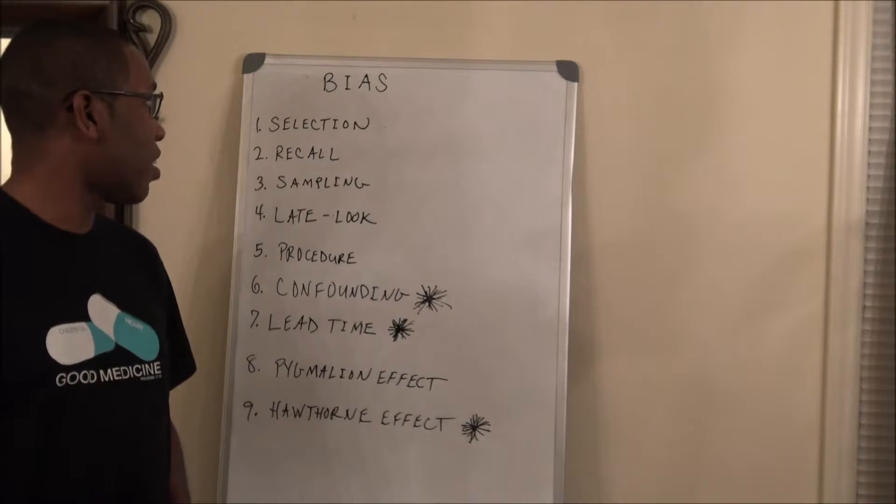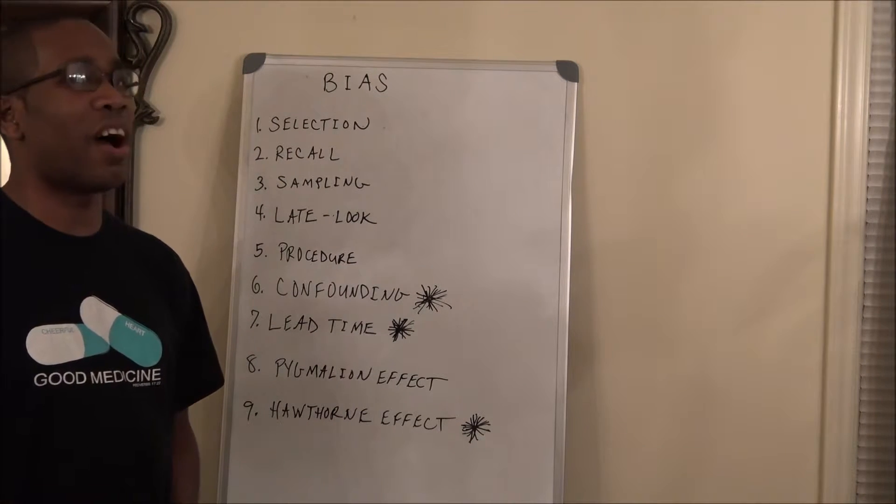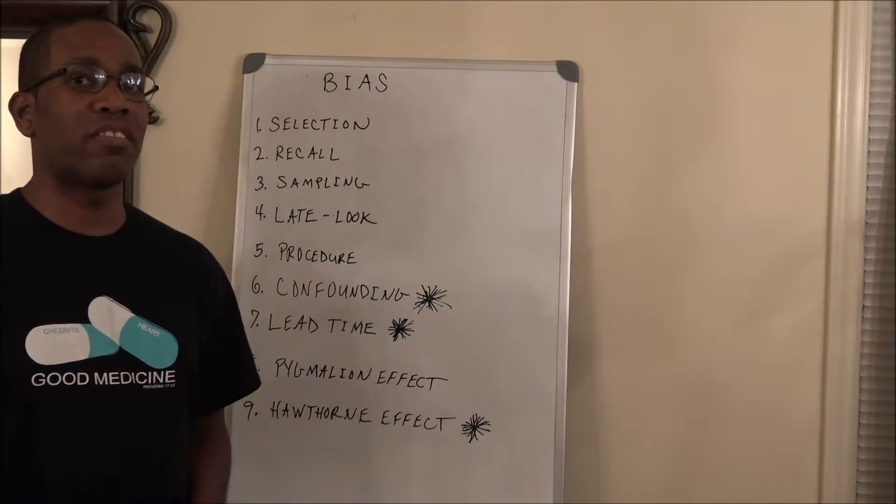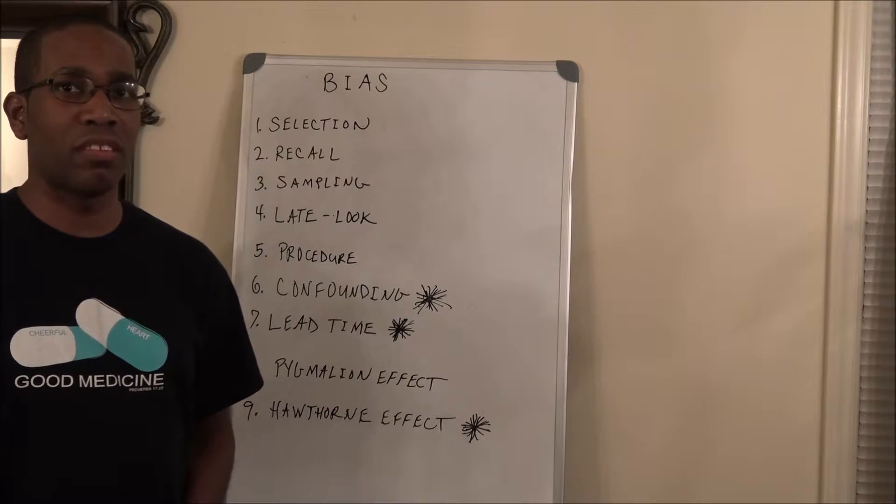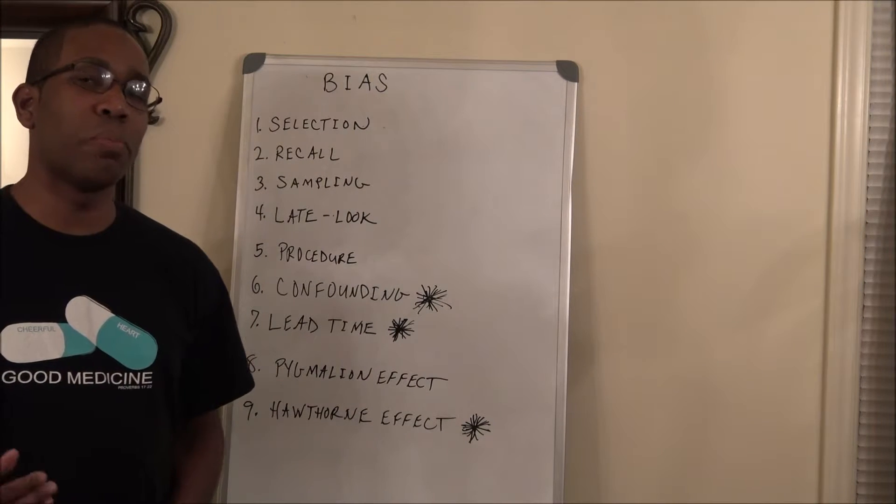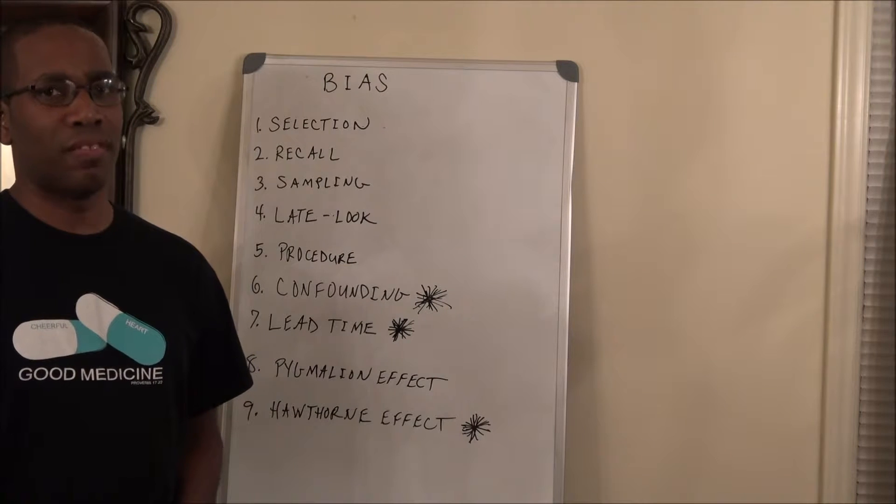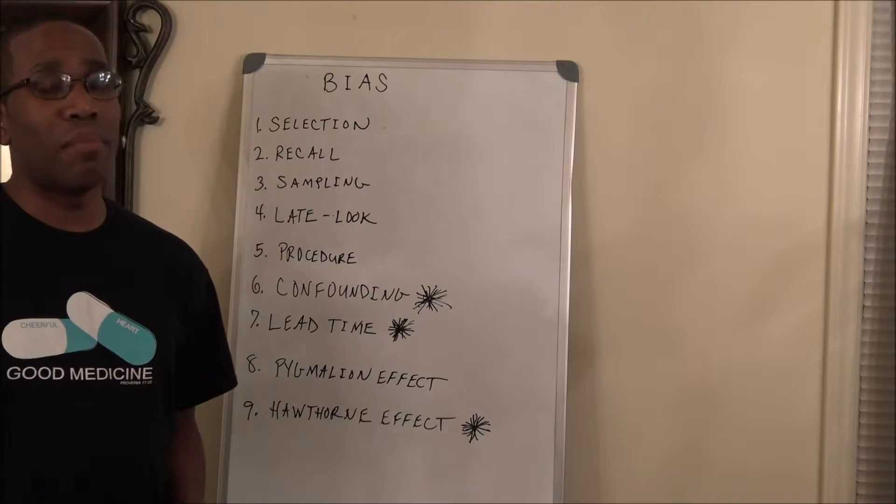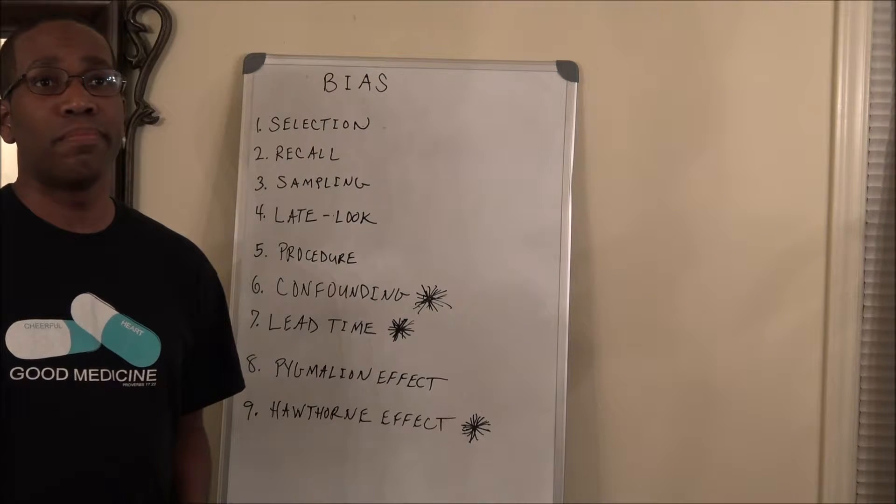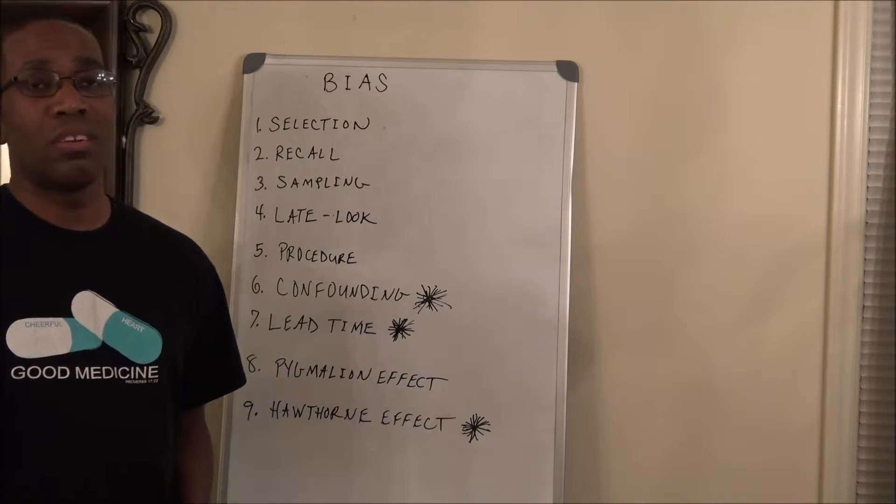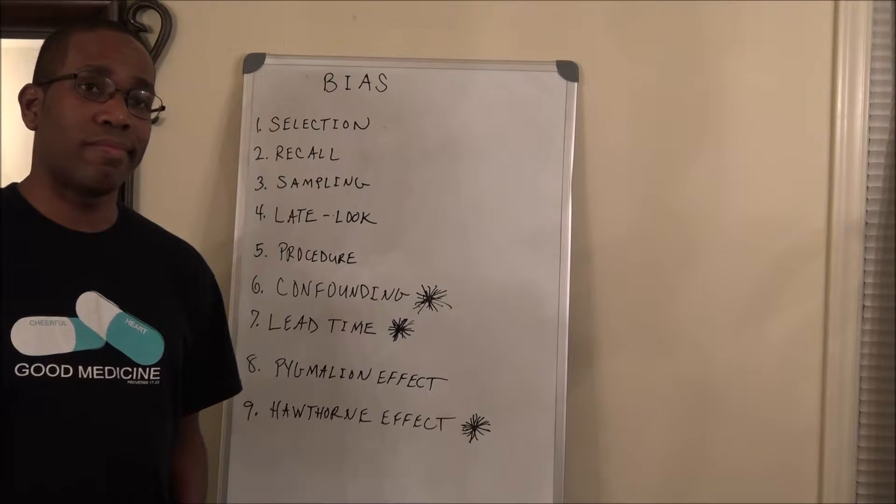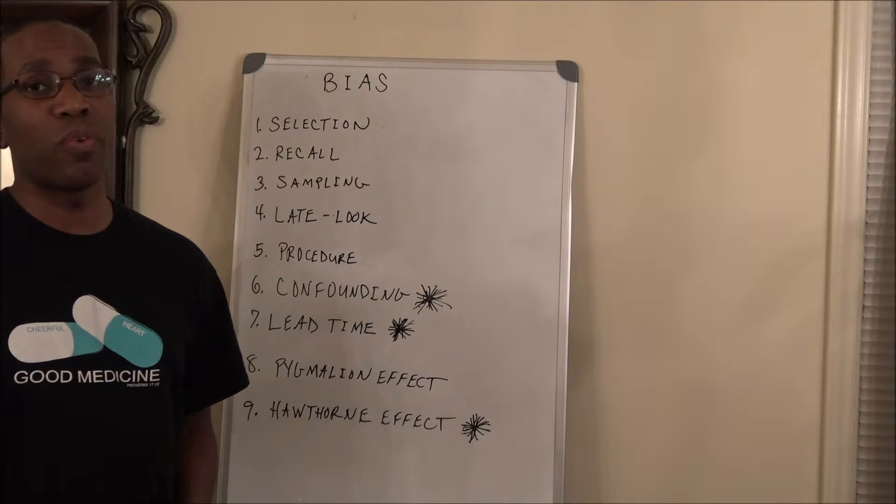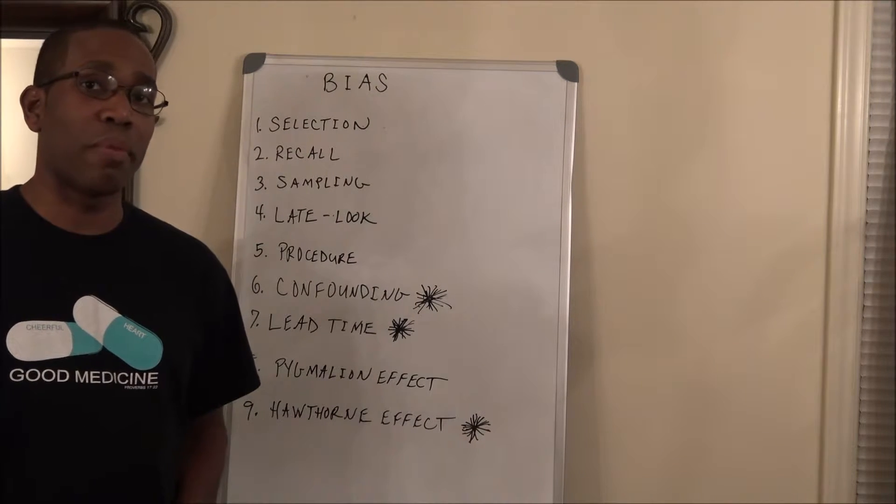Another type of bias, and this is somewhat high yield, is sampling bias. The problem with sampling bias is you're not picking a sample that's reflective of the general population. A lot of times this occurs when people volunteer for particular studies. When people are volunteering for studies, they may have a reason. They may have some sort of financial stake. They may not be individuals that are representative of the general population.